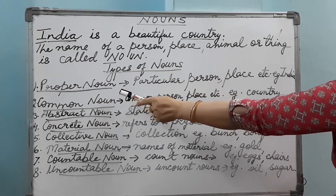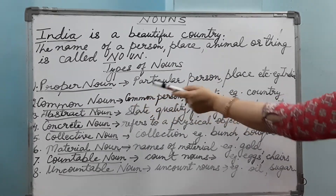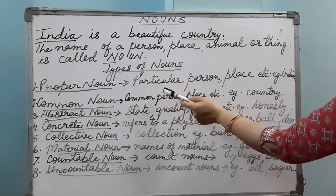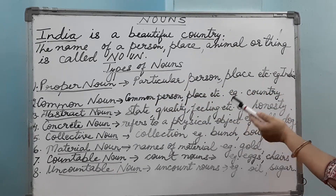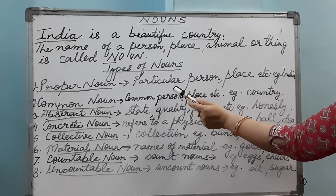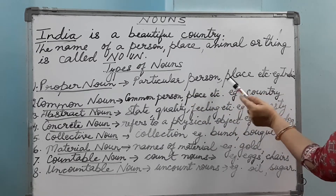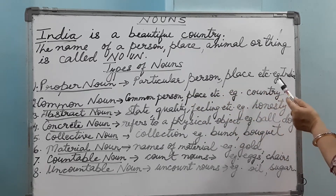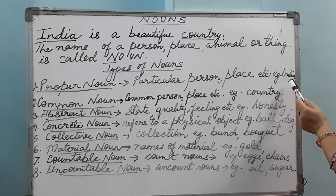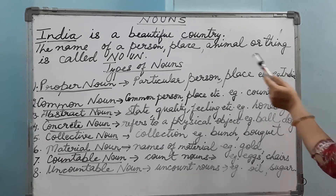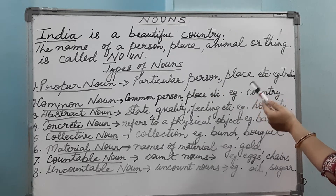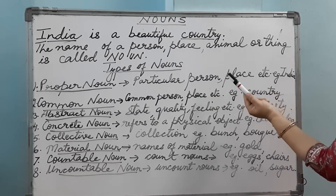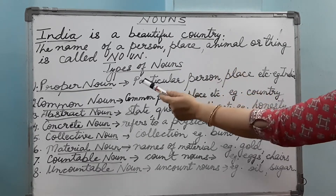The first one is proper noun. A proper noun is the name of a particular person, place, animal, thing, etc. It is always specific for a particular person, place, etc. For example, India — India is the name of a country, so India is a proper noun. If I say the name of a girl, let's take Sita — so Sita becomes a proper noun.